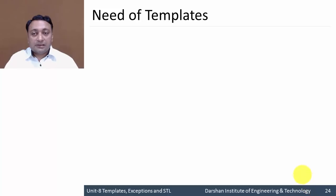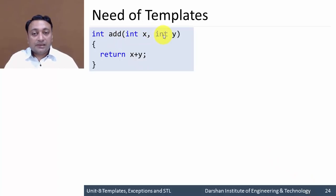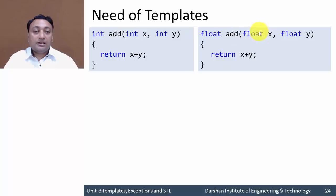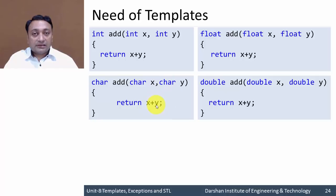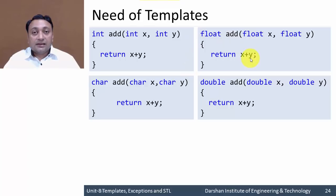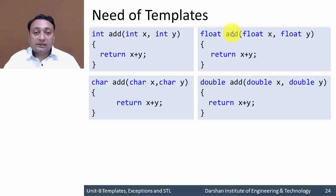Let us understand what the concept of template is. Here we are having one function 'add' with two arguments of type integer and returning x plus y. I am writing the same 'add' function to add two float numbers returning a float value, next for double values returning double, and same way for two characters returning character. You can observe what is uncommon here — that is the data types of each function and return type. Now imagine we have one data type that adjusts itself based on data — that is called generic programming.